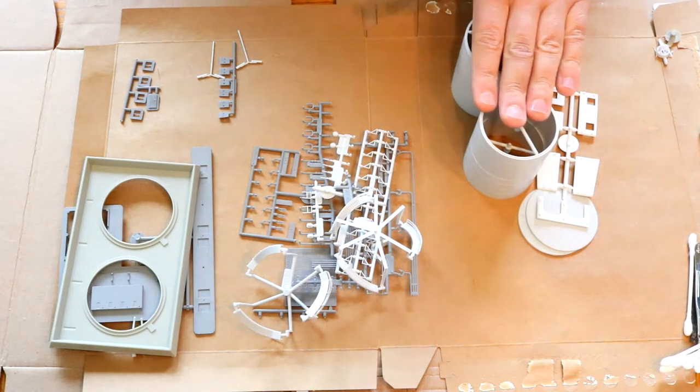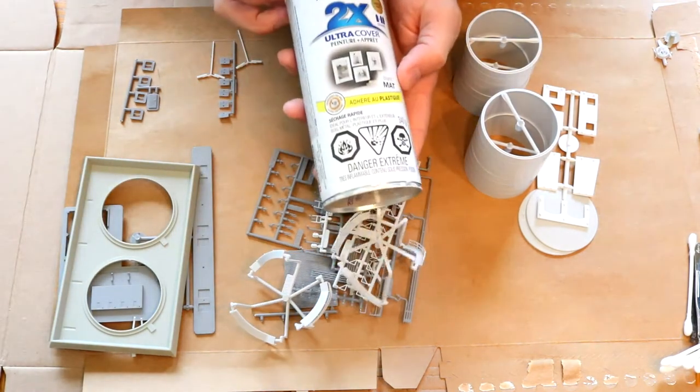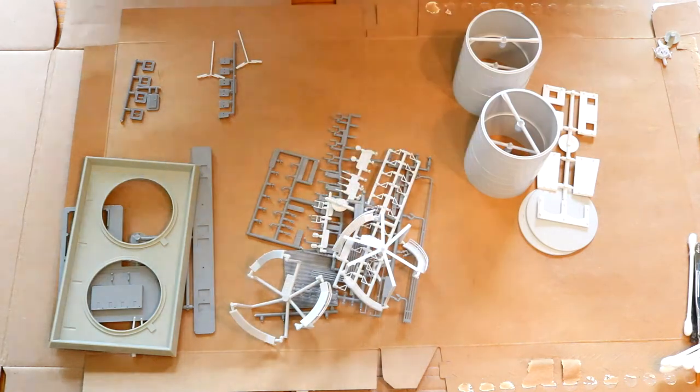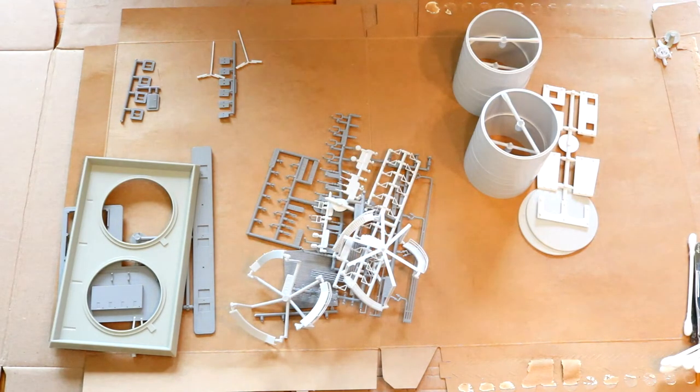And then finally for the bins, the storage containers, I'm going to be using Rustoleum's flat matte white. And so that's the plan. So I guess I'll just go ahead and finish some prepping and then I'll start the painting.